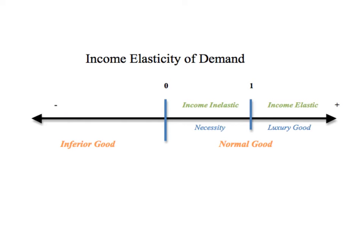A nice way of looking at this is this spectrum. Everything starts right here at zero. The sign obtained from the equation is important — in the case of YED, the sign tells us whether the product we're looking at is a normal good or an inferior good. The demand for a normal good rises as income rises, and the demand for an inferior good falls as income rises. So for normal goods, the value of YED is going to be positive, represented by everything to the right of zero. If it comes out to be a negative number, we'll know that the good we are supplying is indeed an inferior good.